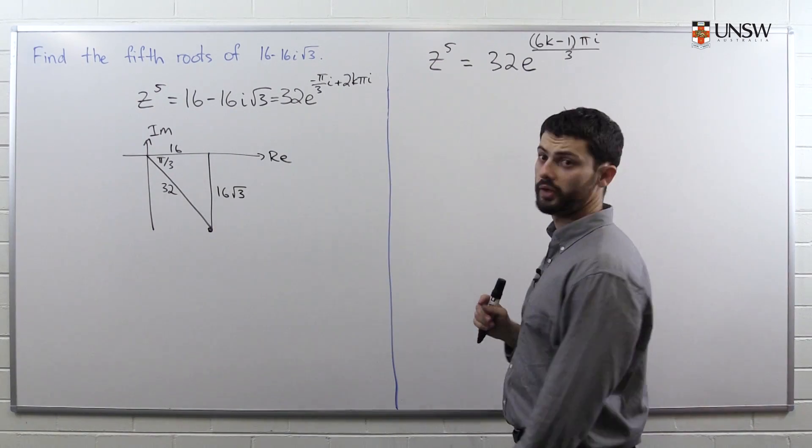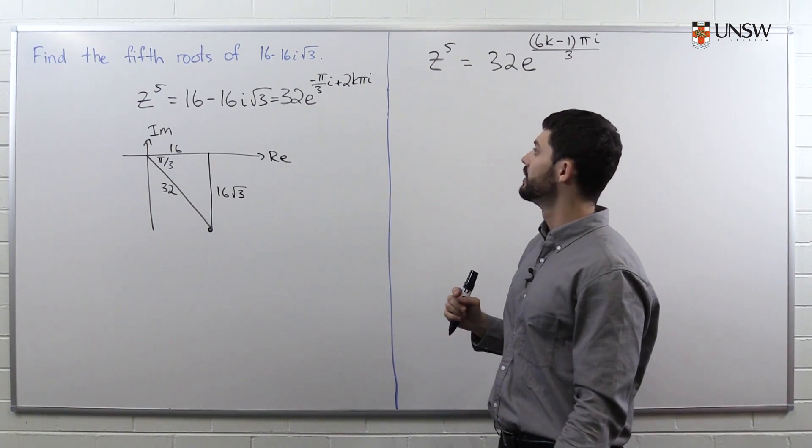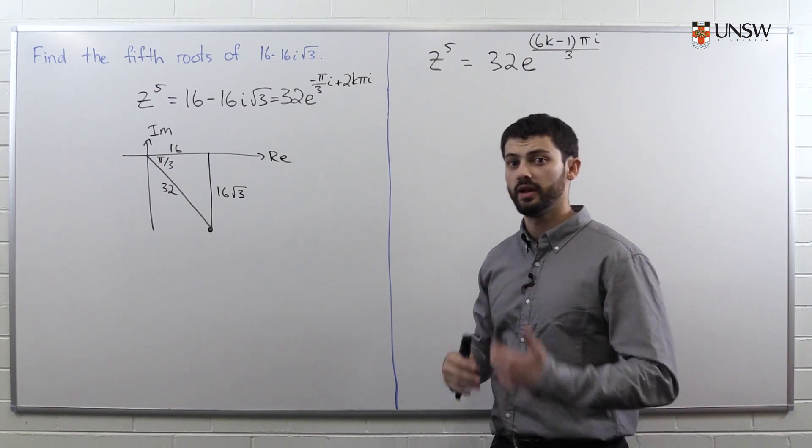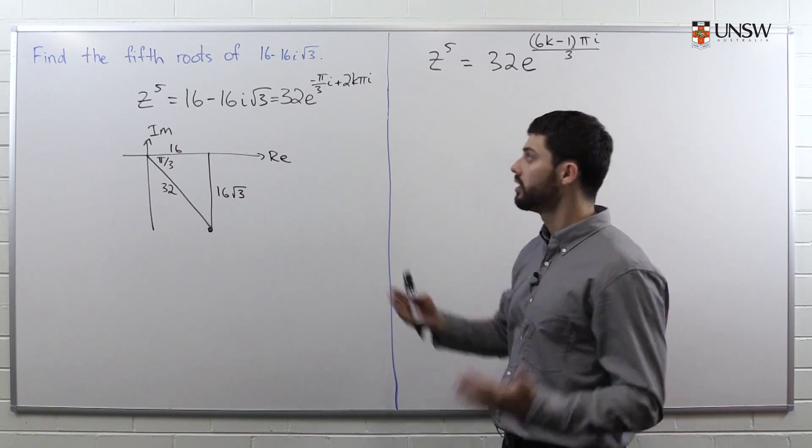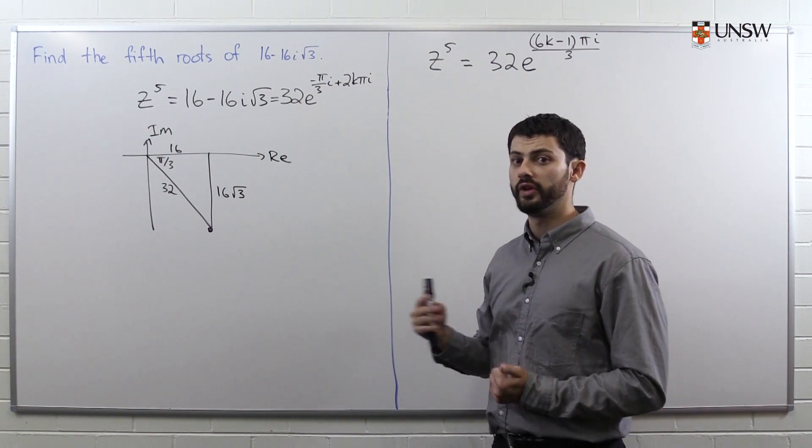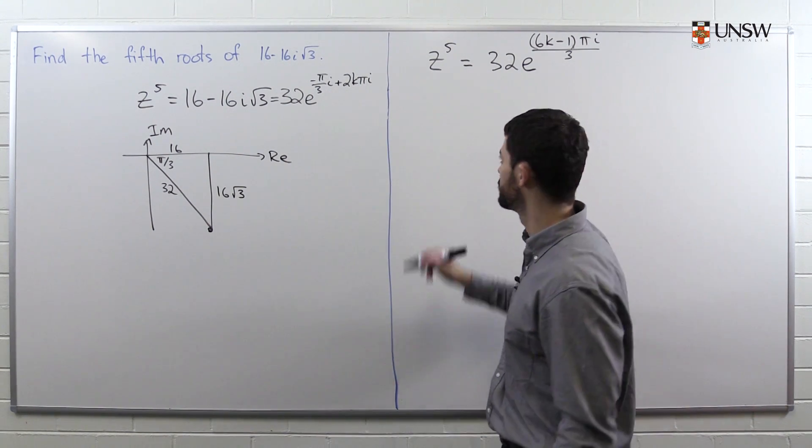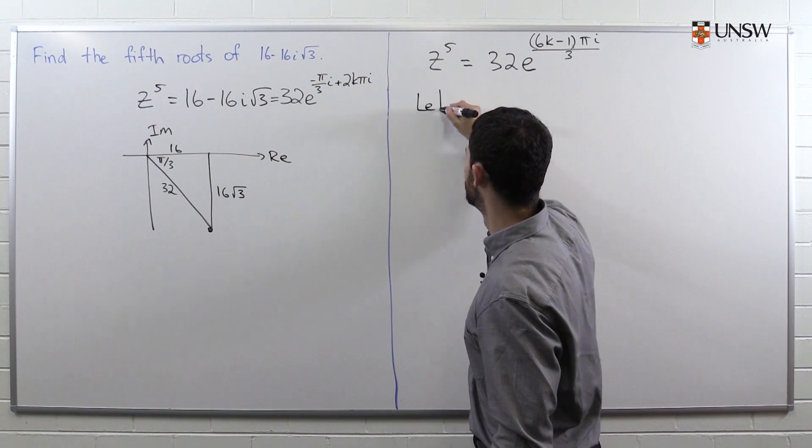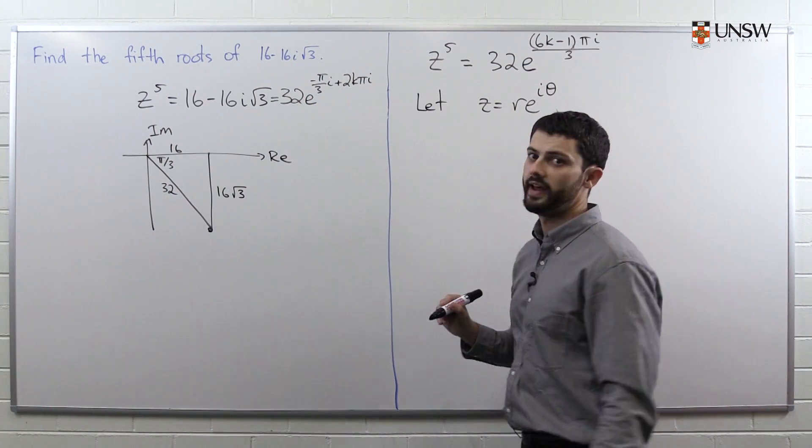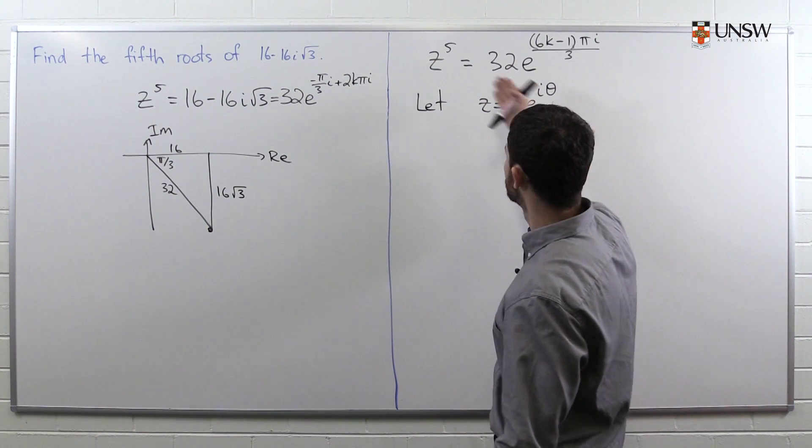So we need to solve the following equation. And generally speaking, whenever we solve equations, we have two choices: either we let z equal x plus iy, and then we try to find the x and the y, or we let z equal r times e^(iθ), and then we need to find the r and the θ. Because the right-hand side is in polar form, we're going to use the second option. So we're going to say, let z = re^(iθ), and our goal is to find r and to find θ. Once we've done that, we've found z.